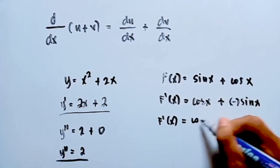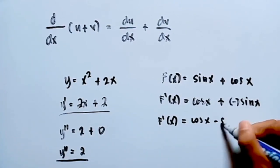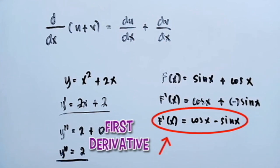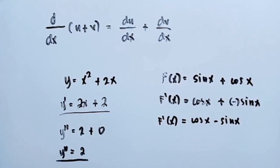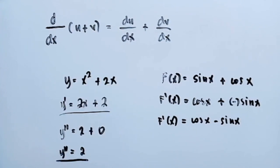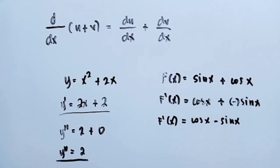The first derivative is equal to cosine x minus sine x. And if we're going to get the third derivative of the function f(x) equal to sine x plus cosine x.